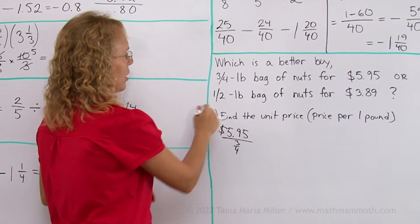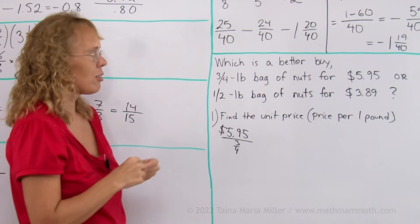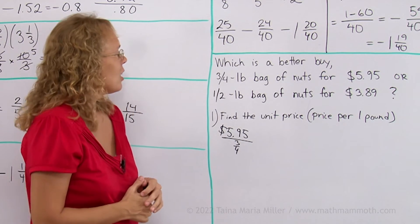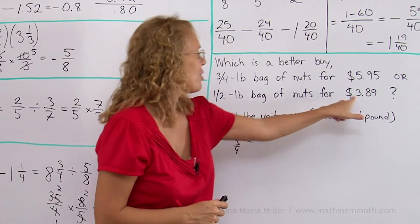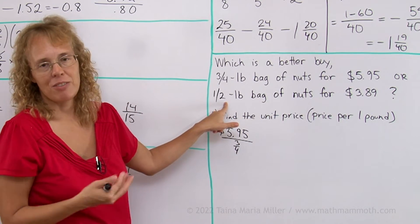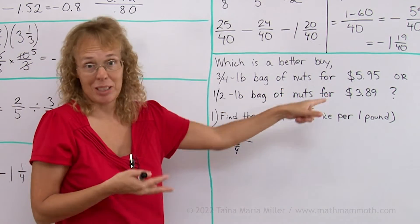And then this one here, how would you find the unit price or the price per one pound? You could again take this number divided by half, but of course it's easier to just multiply that by 2, right?